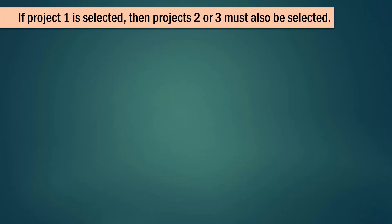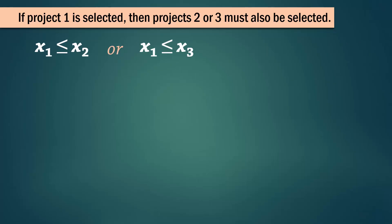Next, if project 1 is selected, then project 2 or 3 or both must also be selected. We can think of this as the case where the child can attend the party if at least one of the parents also attends. So x1 depends on x2 or on x3.